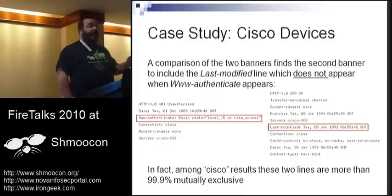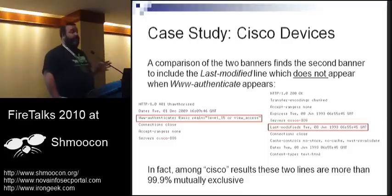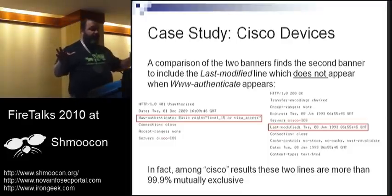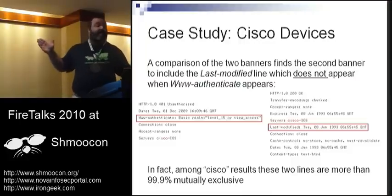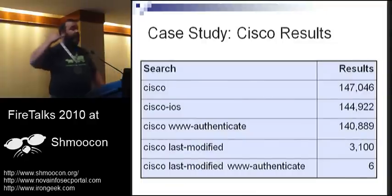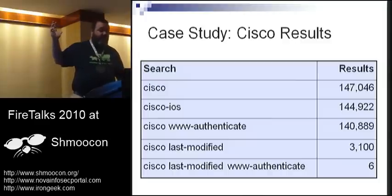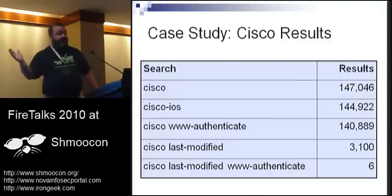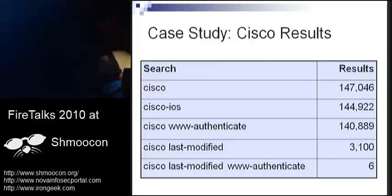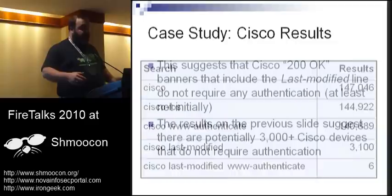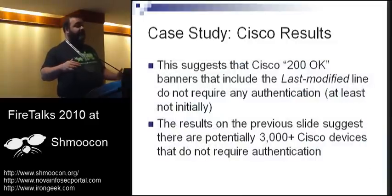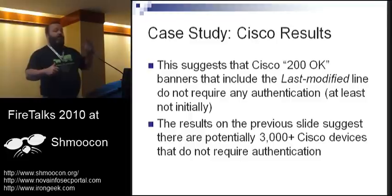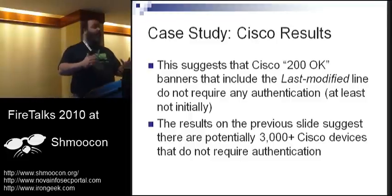If you searched Shodan for Cisco IOS with those two lines, you'd find they're almost 100% mutually exclusive — if it has Last-Modified in it, chances are it doesn't require any authentication at all. Here are the search results: search for Cisco gives 147,000 devices; Cisco IOS gives 144,000; WWW-Authenticate gives 140,000; Last-Modified gives 3,100; Last-Modified and WWW-Authenticate together gives just 6. So there are probably about 3,000 Cisco devices Shodan has already found that don't require any authentication at all.